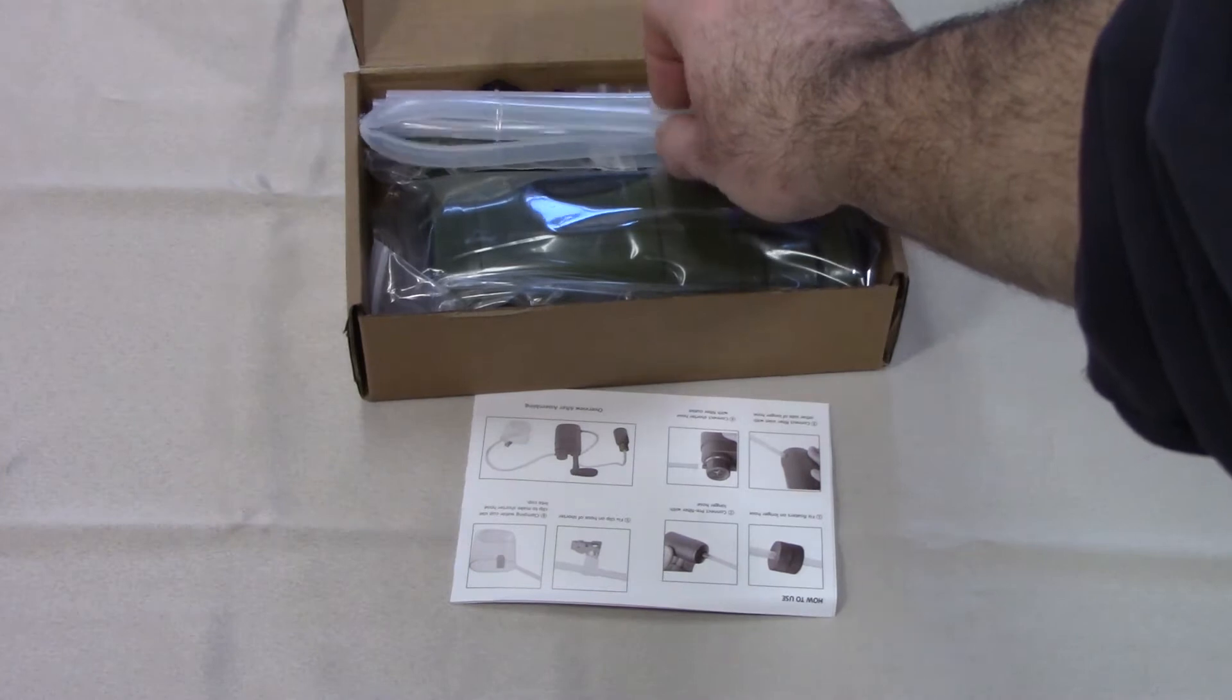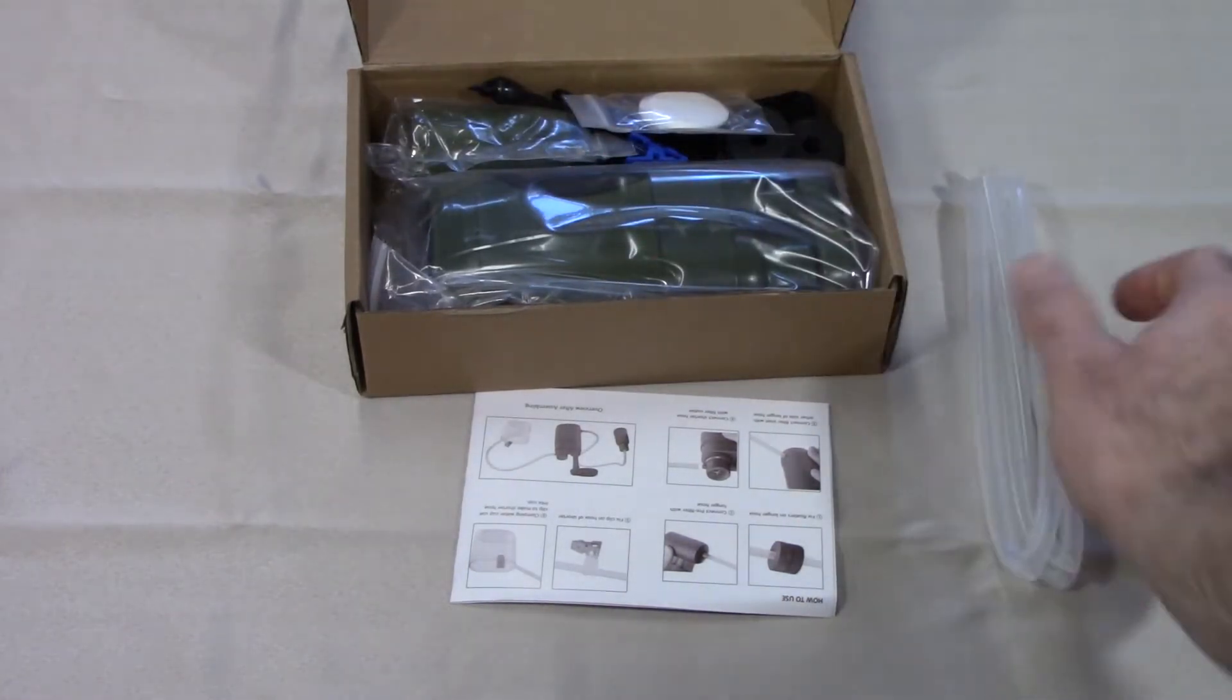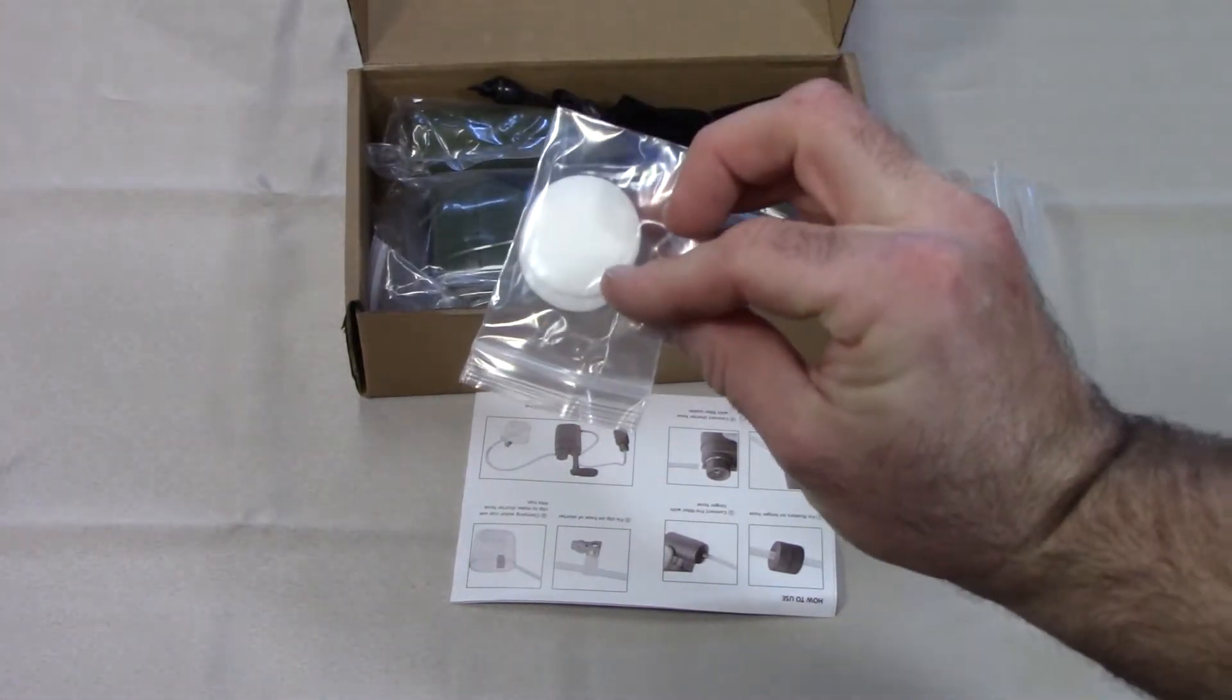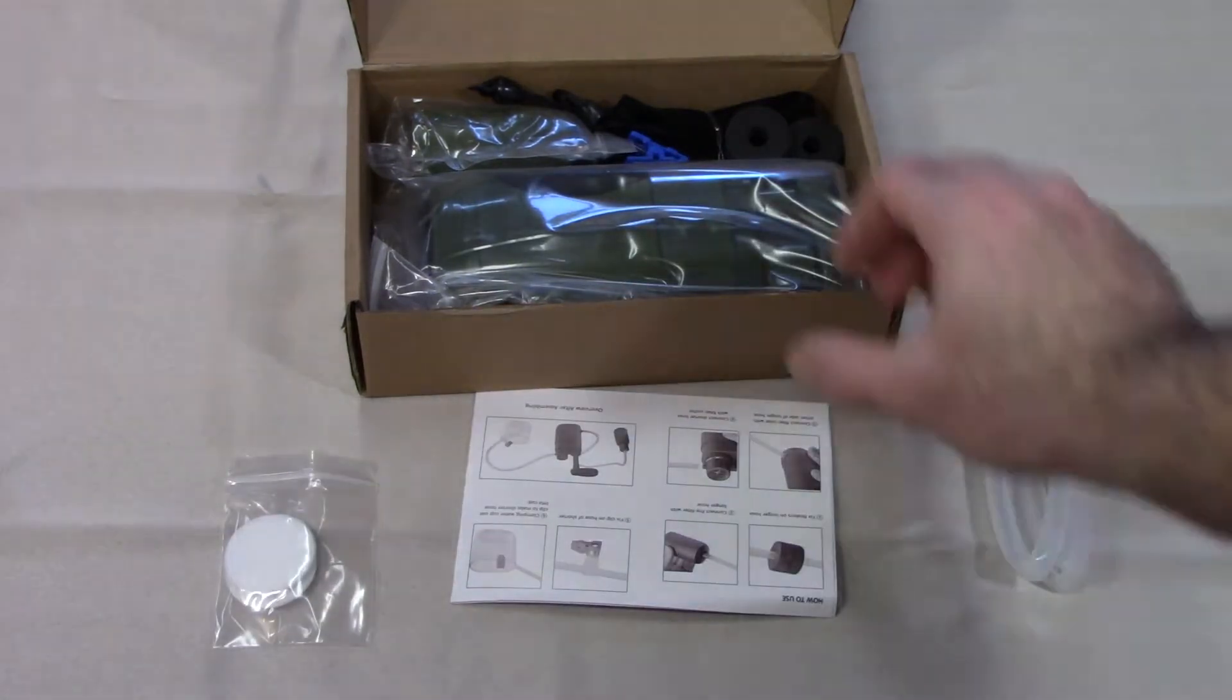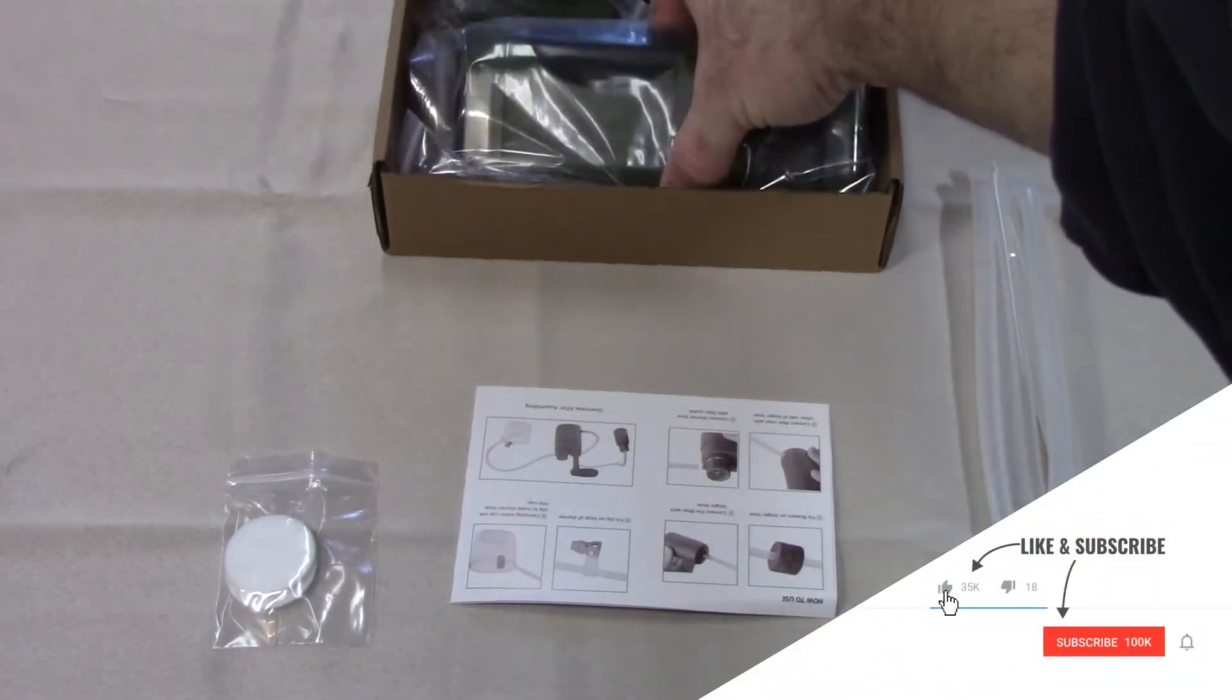Next you'll find two silicone gel hoses. These are your cotton pre-filter replacements. This is the main filter.